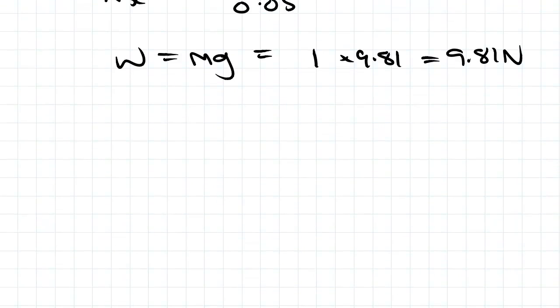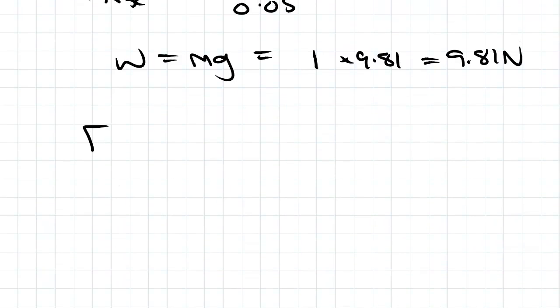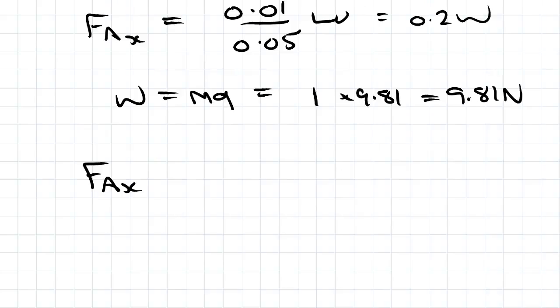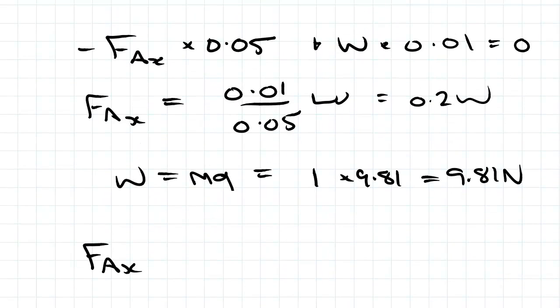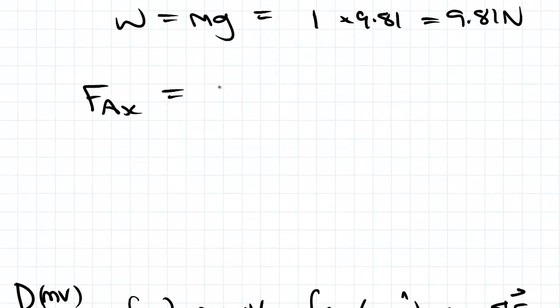We've got 9.81 newtons for our block, and we need to solve for F_Ax. So subbing that back into this equation, we get 0.2 times 9.81.